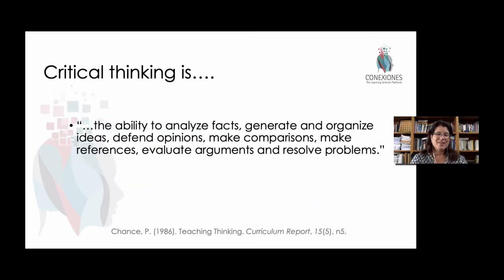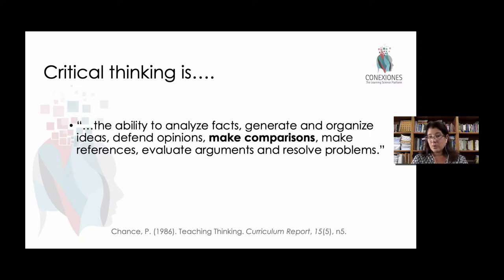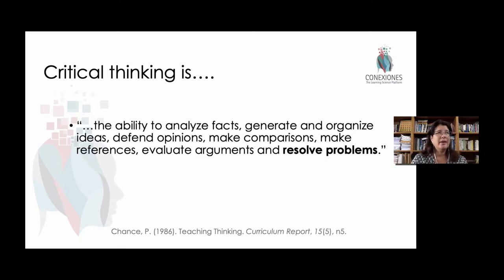One of my favorite definitions is by Chance, from 1986. It's a bit old, but it's still very relevant if we look at all these really important verbs that jump out in this definition. Critical thinking, according to Chance, is the ability to analyze facts, to generate and organize ideas, to defend opinions, to make comparisons, make references — know where that information came from — evaluate arguments, and resolve problems. Chance uses a definition that shows that critical thinking has an end point. It's not just for the sake of thinking that we think, but that it actually helps to resolve problems. And that very first step is to analyze facts, so analysis is a big part of critical thinking.